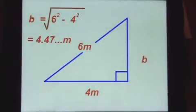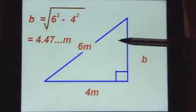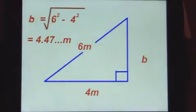In this case, we're trying to find a shorter side. So we're subtracting the squares.